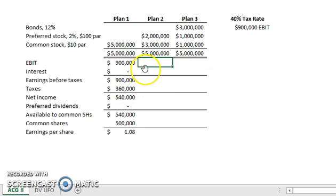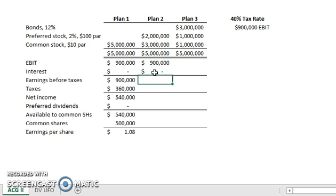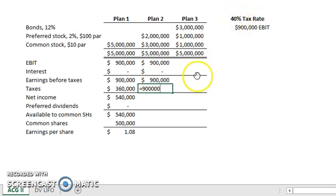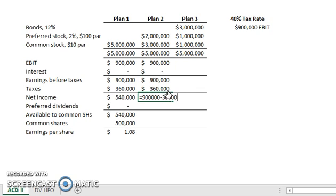Now our next plan: we have the same Earnings Before Interest and Taxes of $900,000. In this case, we still do not have any debt, so there will be zero interest. Earnings Before Taxes is always EBIT minus interest — $900,000 minus zero — so EBT is still $900,000. We apply the same 40% tax rate, giving us the same taxes as Plan 1, and our net income is $900,000 minus $360,000, which gives us $540,000 net income.